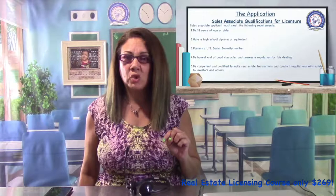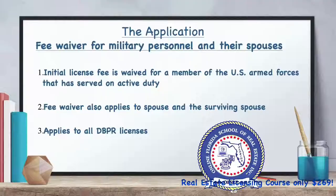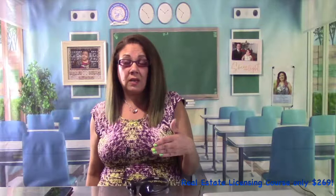Applicants must, however, possess a social security number. The DBPR waives the initial license fee for a member of the armed services who has served on active duty. The fee waiver also applies to a spouse who was married to the active duty member during a period of active duty, and to a surviving spouse of a member of the armed services who at the time of death was serving on active duty.